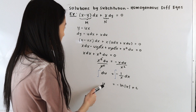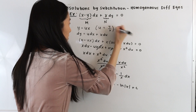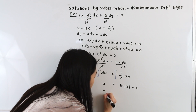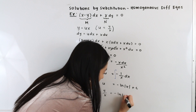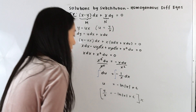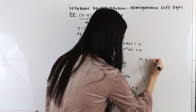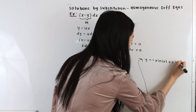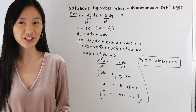Now let's re-substitute for u. Since y equals ux, u equals y over x. Substituting, y over x equals negative ln|x| plus C. Multiplying both sides by x, our final answer is y equals negative x times the natural log of the absolute value of x plus Cx. And that is how you solve a homogeneous differential equation using the method of substitution.